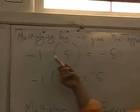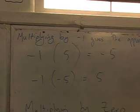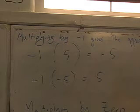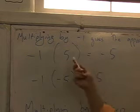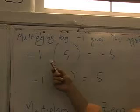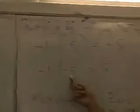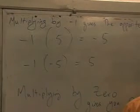Negative 1 does some special things. Does anybody know what negative 1 does? Amanda? It gives the opposite. Yeah, it gives the opposite. When you multiply by negative 1, it turns whatever number you're multiplying into its opposite. So in this case we've got 5, and if we multiply it by negative 1 we end up with negative 5. And if we took negative 5 and multiplied it by negative 1 we'd get 5. So negative 1 has that quality of switching things into their opposites.